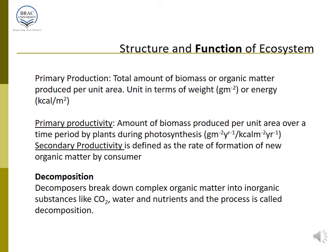In terms of productivity, primary production is important — it is the total biomass or organic matter produced per unit area per square meter, with energy expressed in calories or kilocalories. Primary production can be divided into primary productivity and secondary productivity. Primary productivity is the amount of biomass produced per unit area over a time period by plants during photosynthesis. Secondary productivity is the rate of formation of new organic matter by consumers.